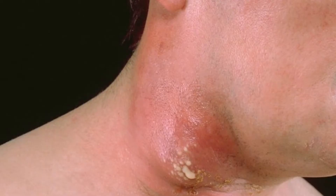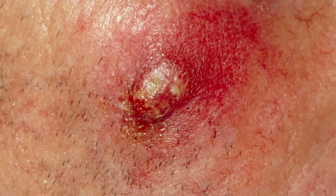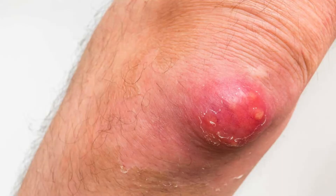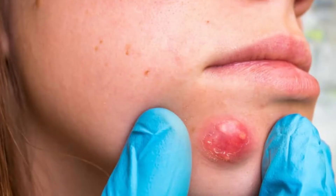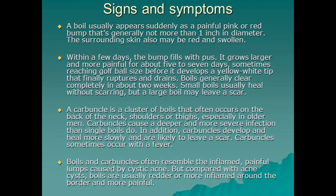Today I am going to discuss this illness in detail. Boils or furuncles usually start as red tender bumps. The bumps quickly fill with pus, growing larger and more painful until they rupture and drain. Areas most likely to be affected are the face, back of the neck, armpits, thighs, and buttocks. You can usually care for a single boil at home, but do not attempt to pick or squeeze it, as that may spread the infection.